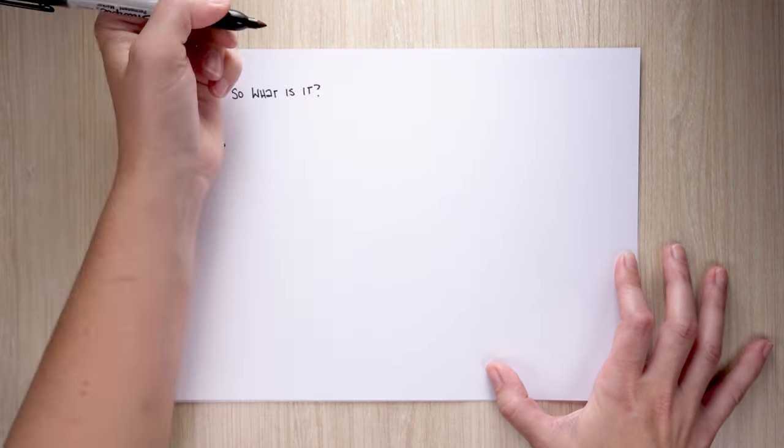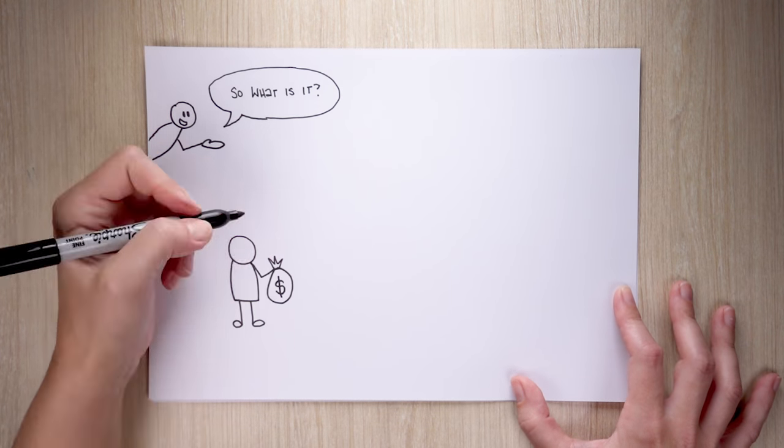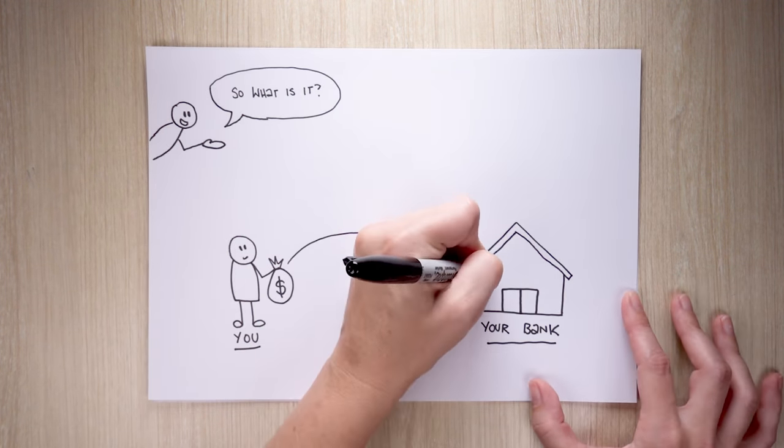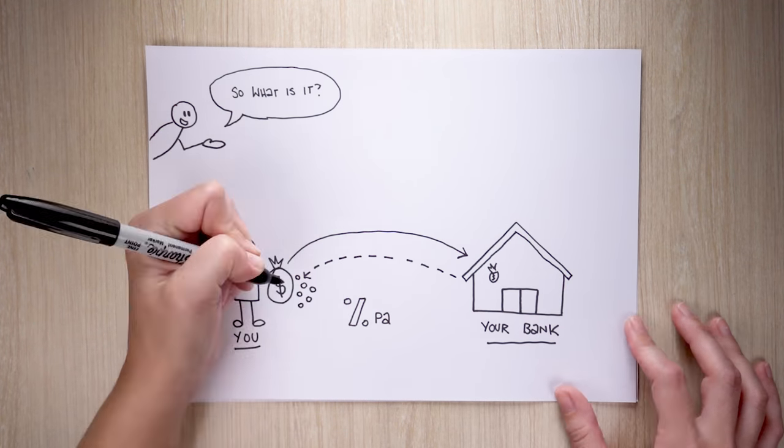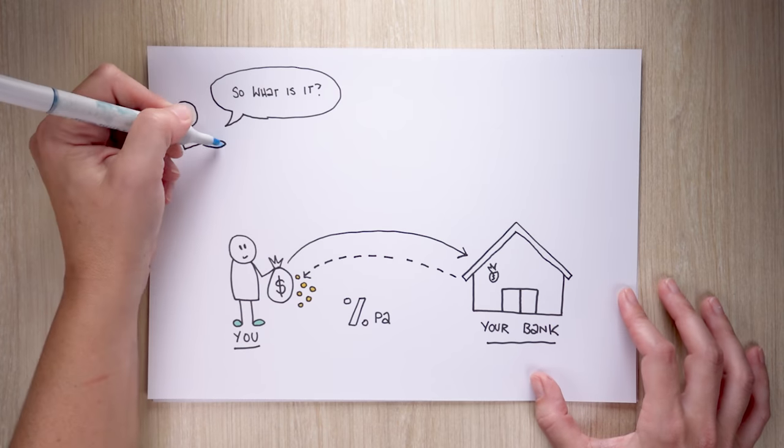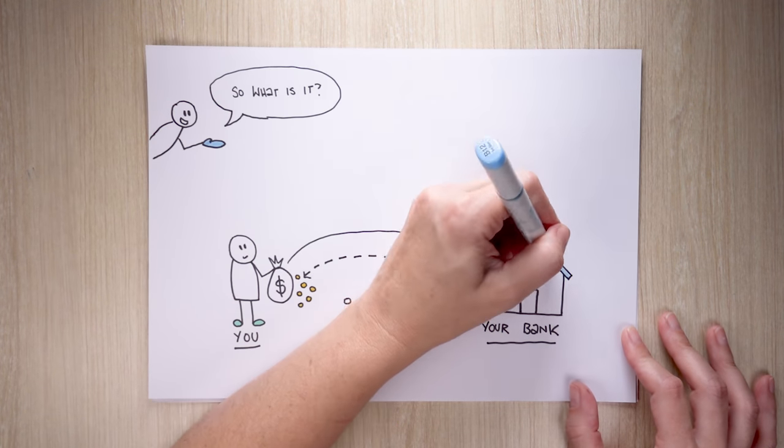First stop, what is interest? Let's take the example of savings accounts. Interest is the money paid to you by the bank as a reward for keeping your money with them. The interest is shown as a percentage, usually expressed per year, and is calculated based on the amount of money in your account.